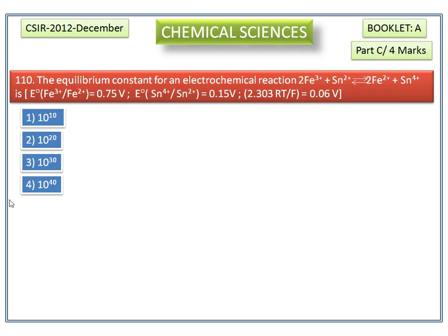Comparing these two values, this value has more value. Usually, the larger the value of the standard reduction potential, the easier it is for the element to be reduced. So it is more possible to reduce Fe³⁺ to Fe²⁺.